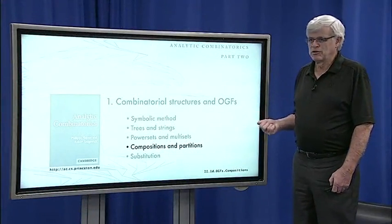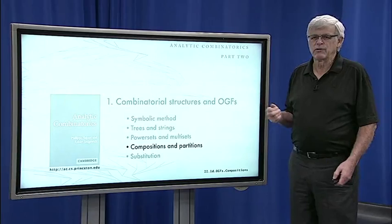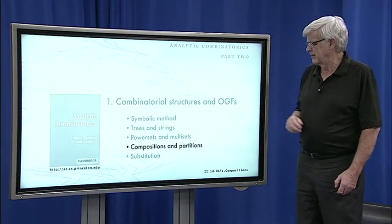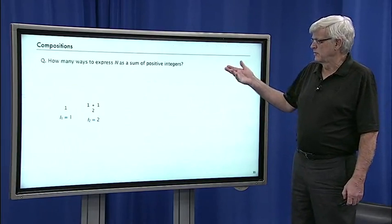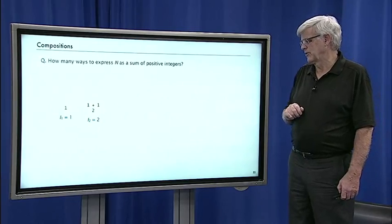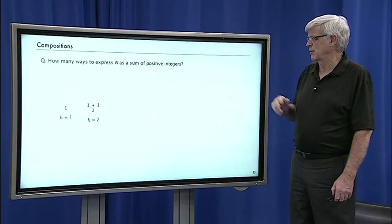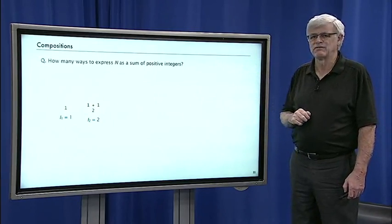Now we're going to look at compositions and partitions which are interesting combinatorial objects that are well studied and well explained by the symbolic method. So composition is a simple idea. You want to know the number of different ways to express n as a sum of positive integers.